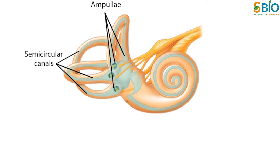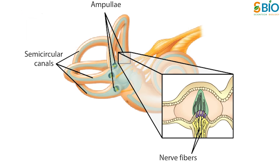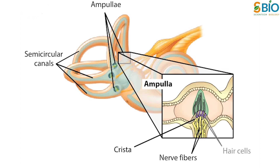Each of the three semicircular canals has at its base a bulbous expansion called the ampulla, which houses the sensory epithelium or crista that contains the hair cells. The structure of the canal suggests how they detect the angular acceleration that arises through rotations of the head. The hair bundles extend out of the crista into a gelatinous mass — the cupula — that bridges the width of the ampulla, forming a viscous barrier through which endolymph cannot circulate.